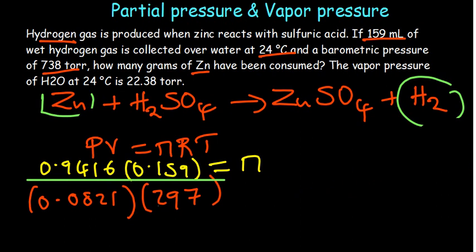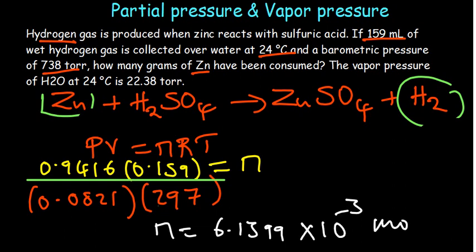0.9416 multiplied by 0.159 divided by 0.0821 divided by 297. The value of the number of moles I'm getting is 6.1399 times 10 to the power of negative 3 moles. That's the value we're getting of the hydrogen gas.